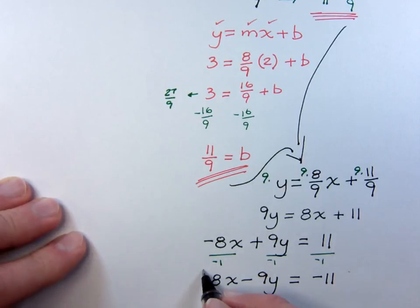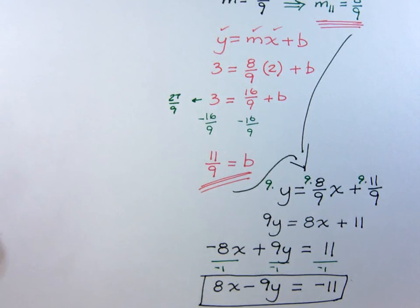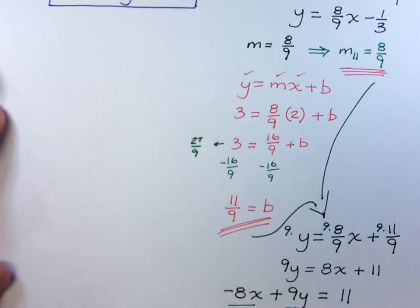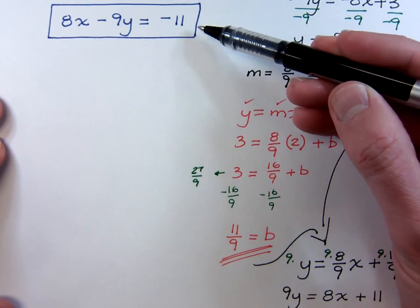You see, in standard form, this is going to match up with what we already had. 8x minus 9y equals negative 11.